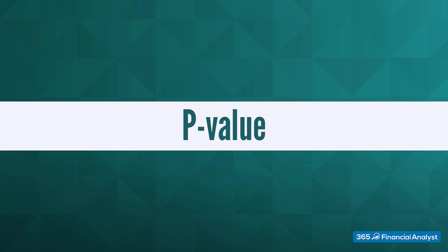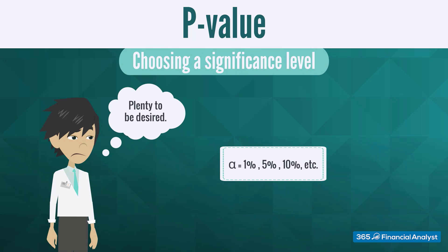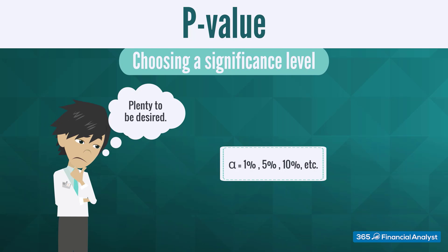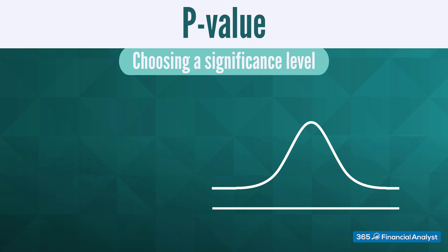Choosing an arbitrary level of significance is an approach that leaves plenty to be desired. Why would an analyst opt for 5% instead of 1%? And how do they communicate the level of strength of their test at different levels of significance? Most practitioners prefer an alternative method.